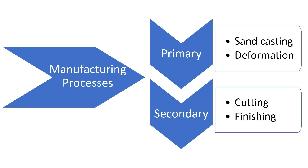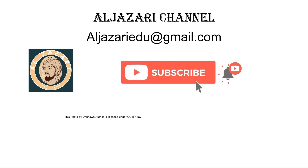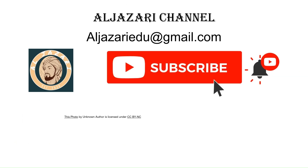Secondary processes are used to give the near-shape product its final shape with the required accuracy and appearance. Examples of this are the cutting and finishing processes.